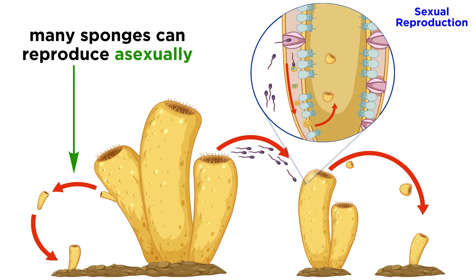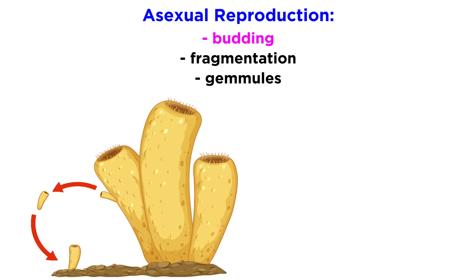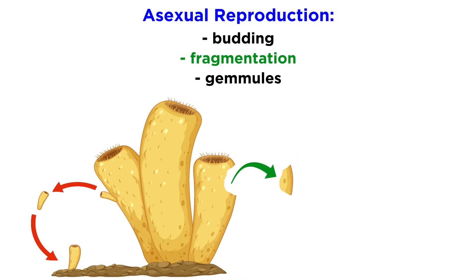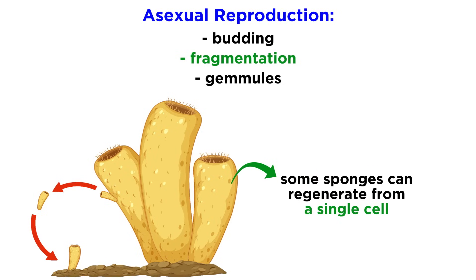Many sponge species can also asexually reproduce using one of three different methods: budding, fragmentation, and gemmules. Contrary to popular belief, only a few species can reproduce asexually by budding, where a new sponge develops from an outgrowth on the parent sponge which then drops off. Fragmentation is more common — all known living sponges can remold their bodies, and fragmentation occurs when a sponge regenerates from broken-off fragments, though this only works if the fragments include the right types of cells, like the totipotent amoebocytes. Some sponges can completely regenerate from a single cell, but it must be the right cell.